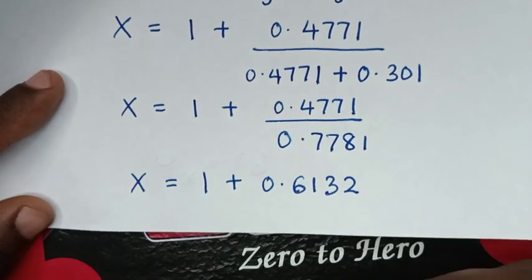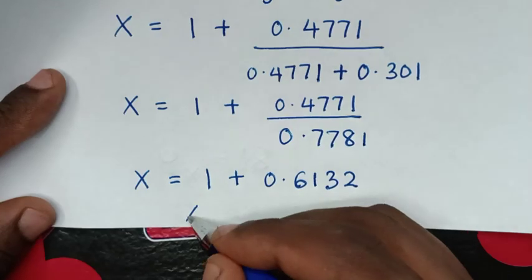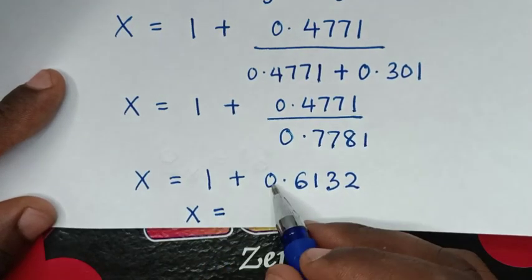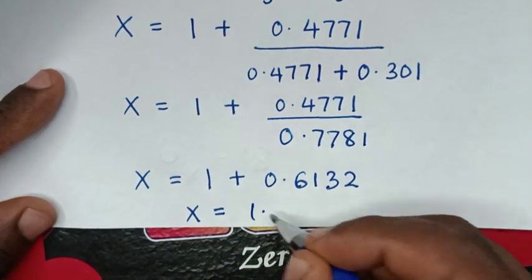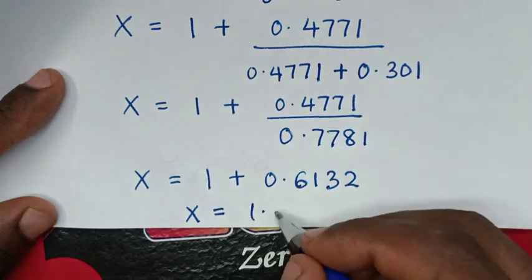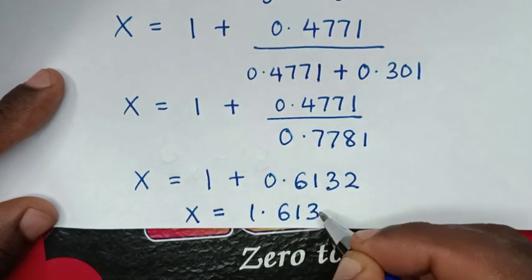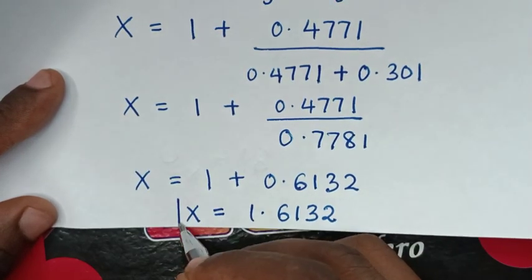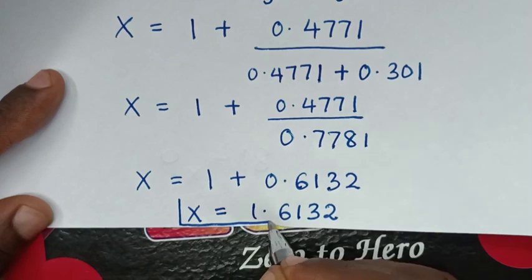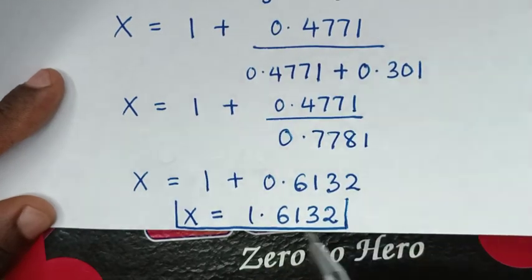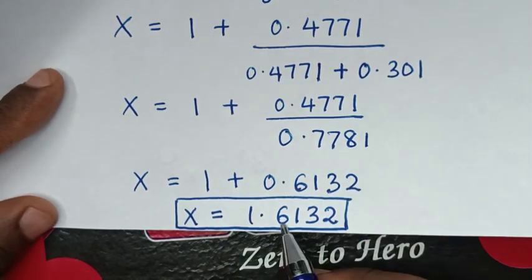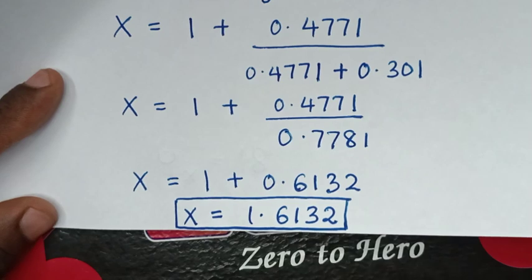Then, it will be x is equal to 1 plus 0.6132, which gives 1.6132. So this is the final answer for the value of x in our problem: x equals 1.6132.